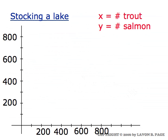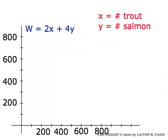So we'll let X represent the number of trout and Y the number of salmon that are used to stock the lake. Since the trout weigh two pounds each and the salmon weigh four pounds each, the total weight of the fish in the lake will be 2X plus 4Y.